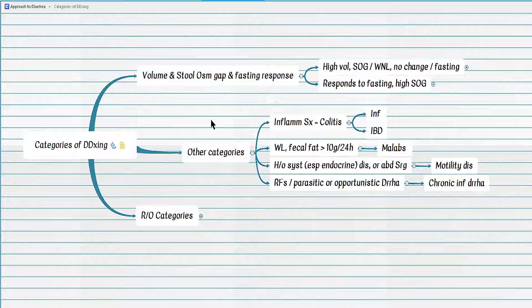Beyond osmotic and secretory types, there are at least five other major categories of chronic diarrhea: inflammatory, malabsorptive, motility disorder, chronic infectious, and functional diarrhea. For a patient with chronic diarrhea and weight loss, if fecal occult blood is positive or the patient is older, assess for cancer. In a younger patient with negative fecal occult blood, rule out malabsorption. Elevated fecal fat levels on malabsorption testing would be diagnostic.